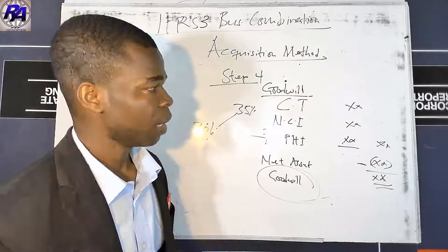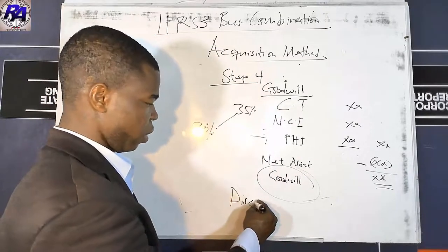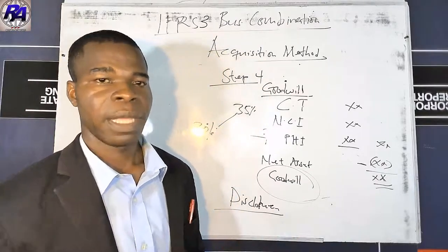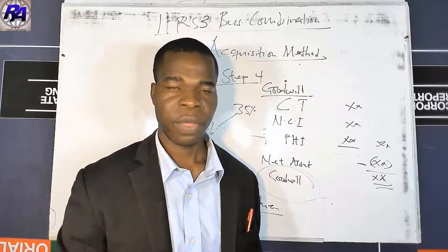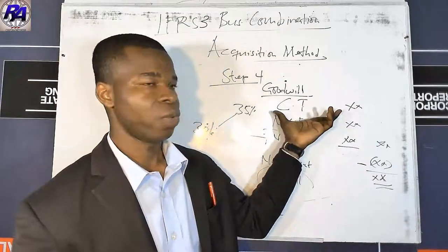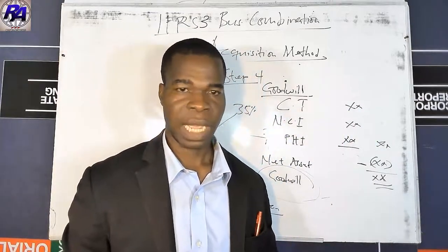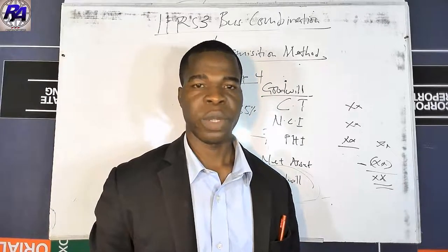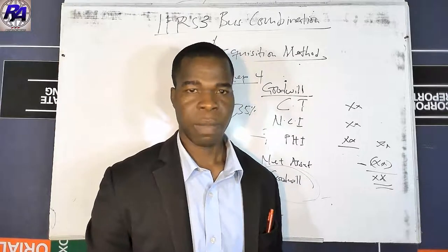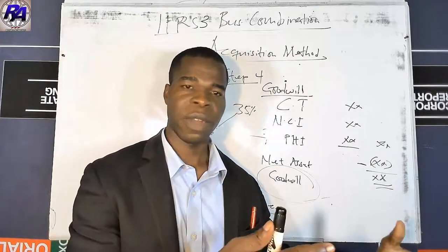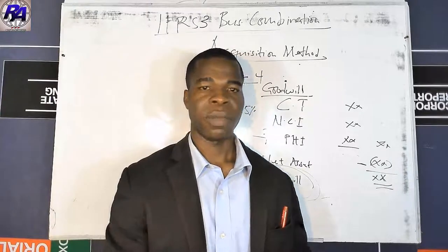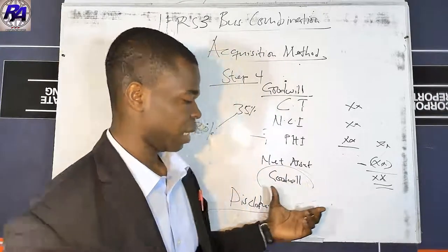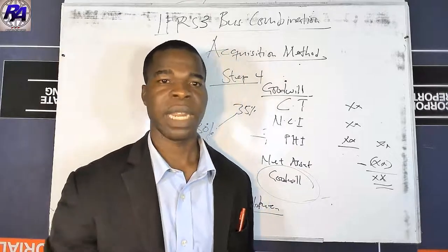The last area of IFRS 3 is disclosure — disclosing important items such as how the entity was acquired, the percentage obtained, the elements confirming it is a business combination, how assets and liabilities were measured, and how NCI was measured. The objective of business combination is to improve the relevance, reliability, and comparability of financial statement information about business combinations and their effects, so there is heavy emphasis on disclosure.